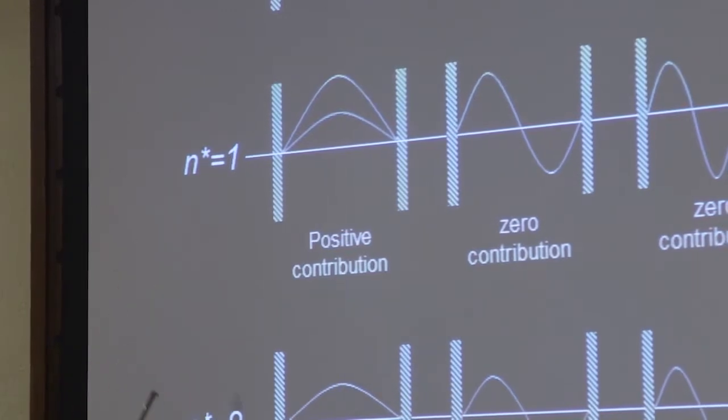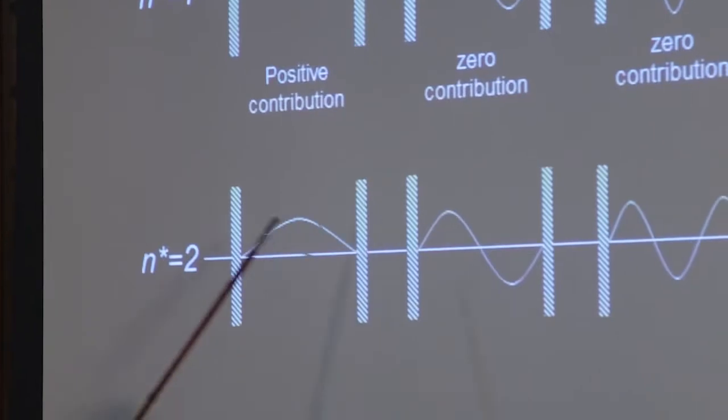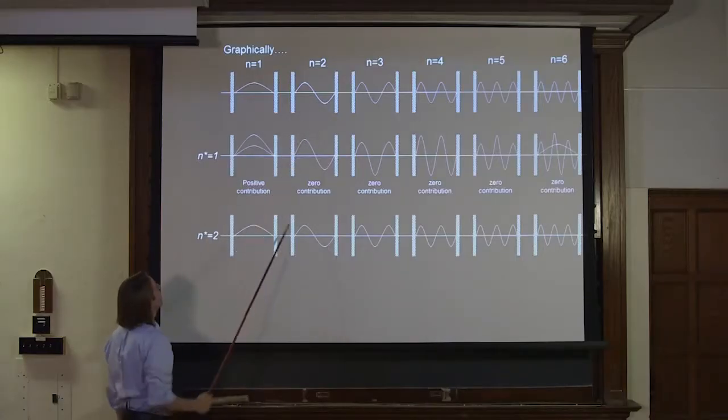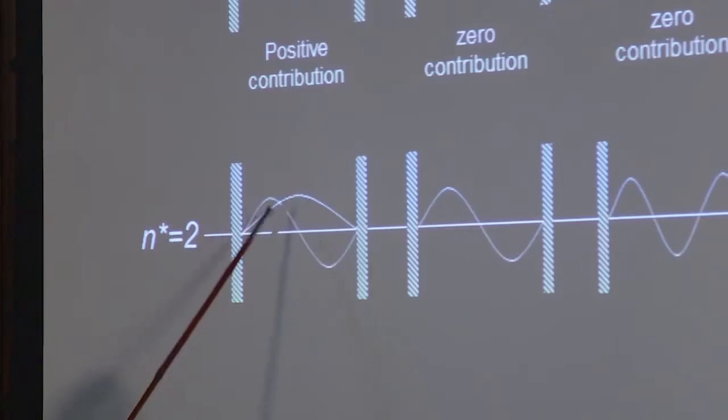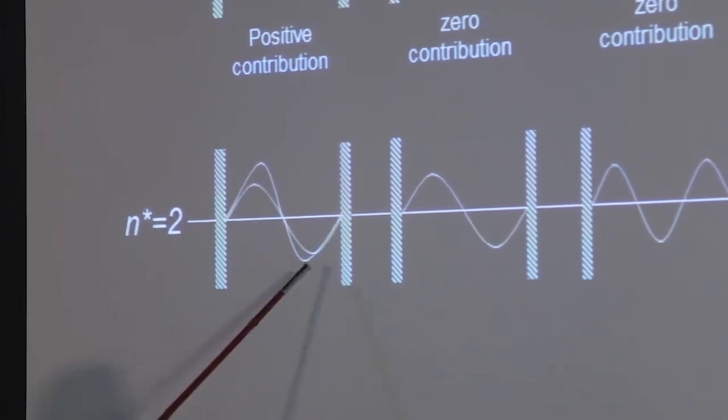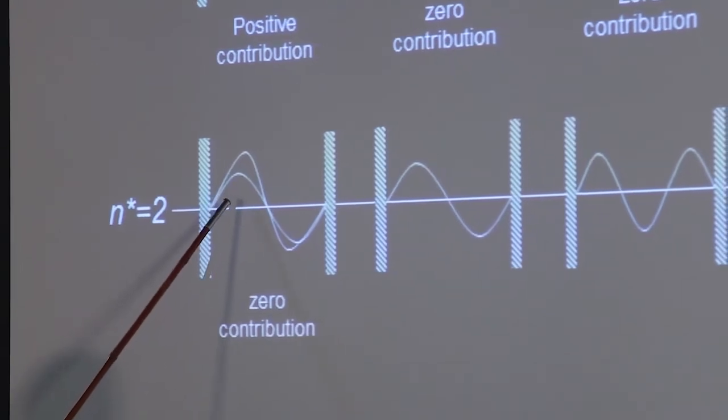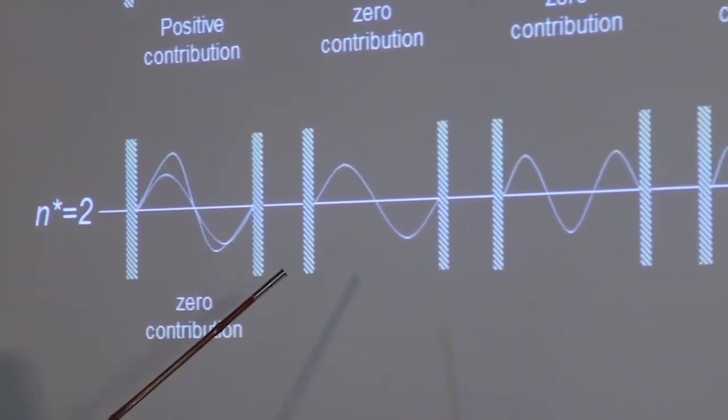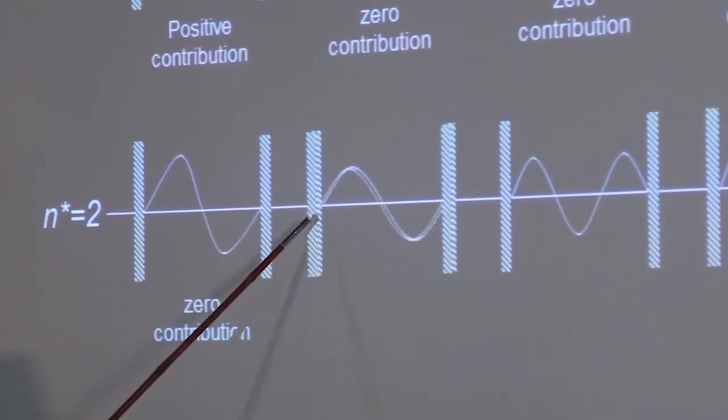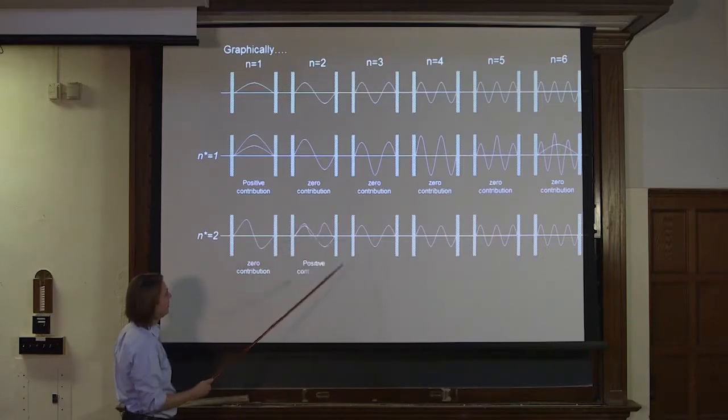And if you then move on to n star equals 2 and apply that to your series, we'll see the same thing. n star equals 2 looks like that there. So bring that down. This times this function is going to look something like that. It's again going to be symmetric. Therefore, it's going to give 0 contribution. Then we bring our n star equals 2 over here to n equals 2. And now we're just squaring a function. So when you square a function, everything is positive. You integrate under that where everything's positive, you get a positive contribution.